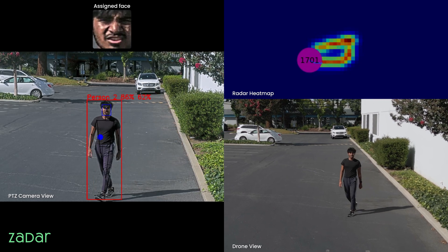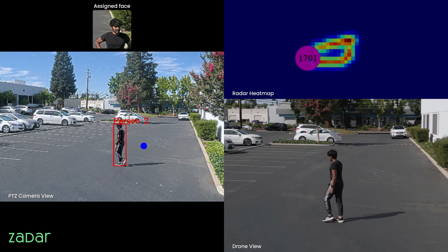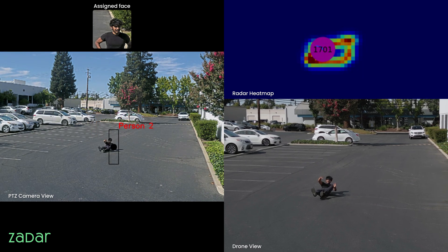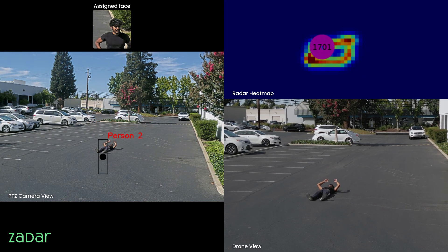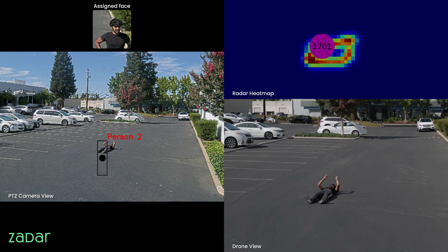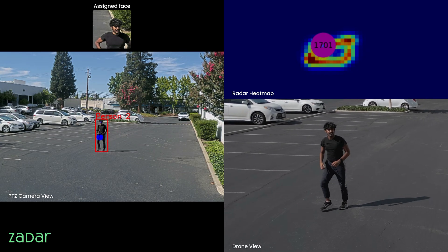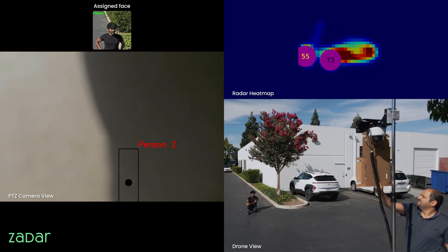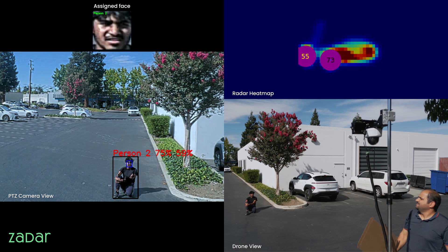When incidents happen, like a fall in a crowd, Z-Prime sees it instantly. Like in this scene, the red bounding box with a blue dot turns into black, indicating a fall of a person. Even if cameras are blocked, Z-Prime ensures critical alerts never go unnoticed.